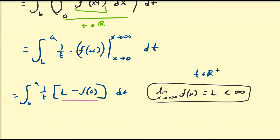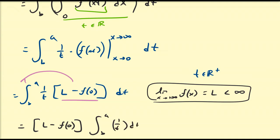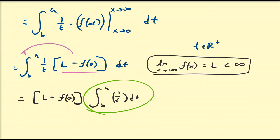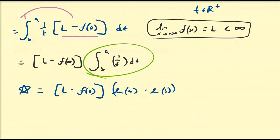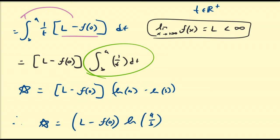L is a finite number, so I can factor that out. This is going to be equal to L minus f(0) times the integral from b to a of 1/t dt. This integral is, of course, a logarithm, so this equals L minus f(0) times the natural log of a minus the natural log of b. Using our properties of logarithms, we have L minus f(0) times the natural log of a over b, which is equivalent to f(0) minus L times the natural log of b over a. That gives us the result we want.